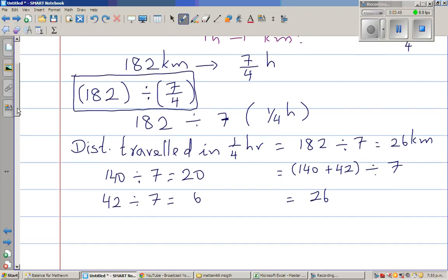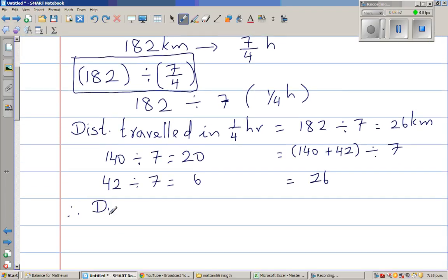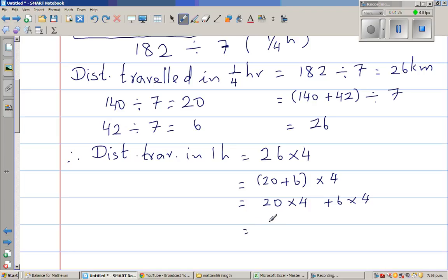So therefore distance traveled in one hour would be, this is in a quarter hour. So one hour has how many quarter hours? Four quarter hours. So this is 26 times four, which is 20 plus six times four. So this is nothing but 20 times four plus six times four. This is the distributive property. Which is nothing but, this is 80 plus 24, which is 104 kilometers.